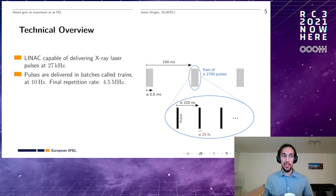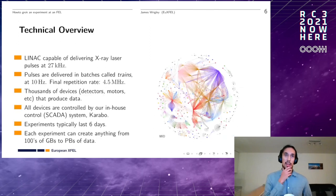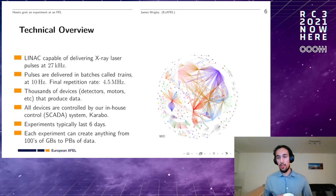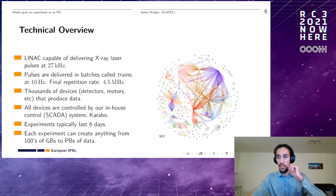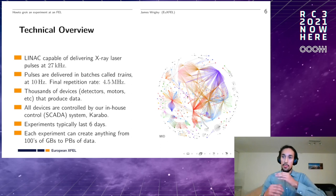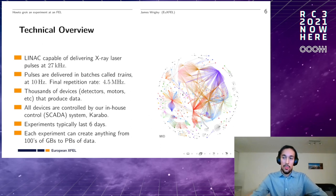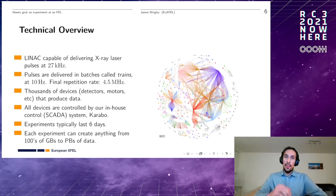This whole machine is extremely complicated — there are literally thousands or tens of thousands of different devices that produce data at XFEL. These can be either hardware or software devices, all controlled using the in-house control system called Karabo, developed from scratch at XFEL. On the right-hand side there's a diagram of devices just for one instrument — the MID instrument — where each node represents a single device and lines between nodes represent data being shared between devices. Similar graphs could be generated for the other five instruments.